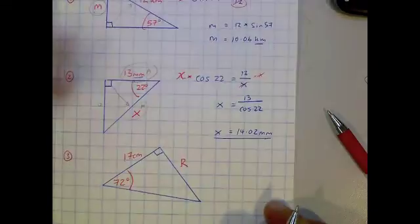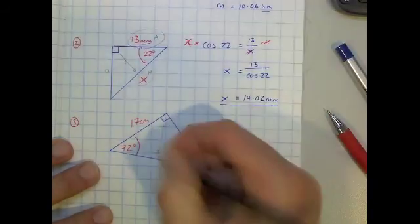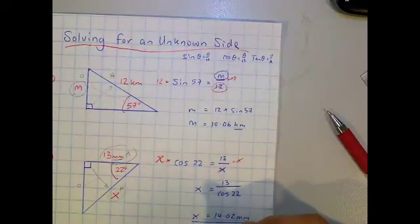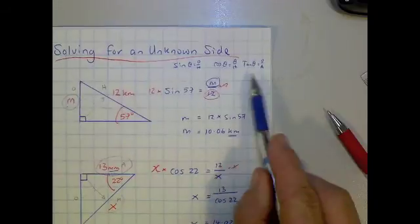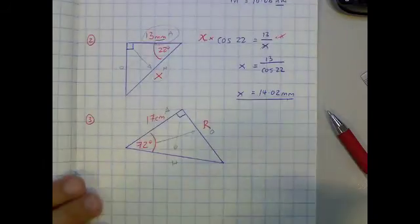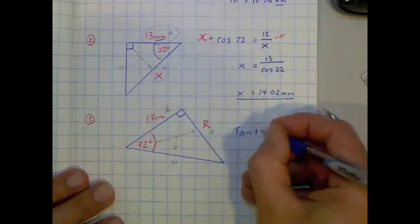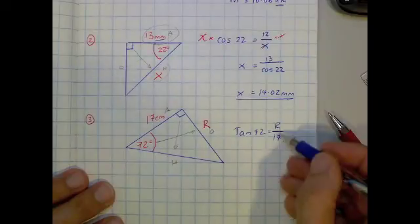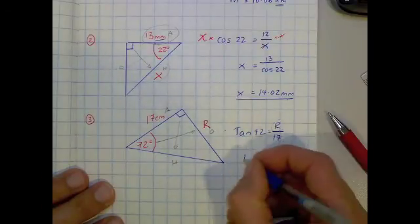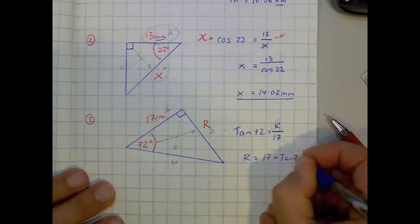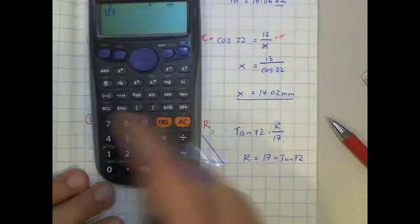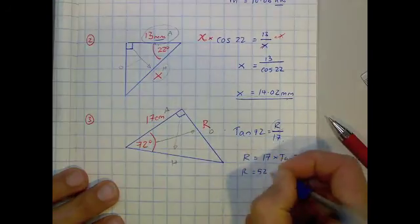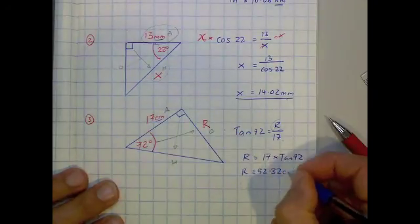Let's do one more. Label the triangle: H, then O, then A. We're using O and A, so that's the tangent ratio. tan(72) equals R over 17 — R goes on top and 17 on the bottom. Get rid of the divide by 17 by multiplying both sides by 17. On the Casio: 17 times tan(72) gives 52.3. Don't forget the units — centimeters!